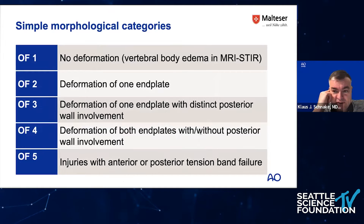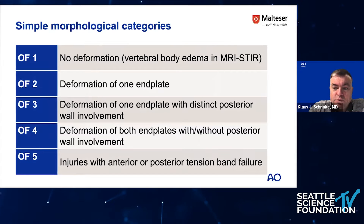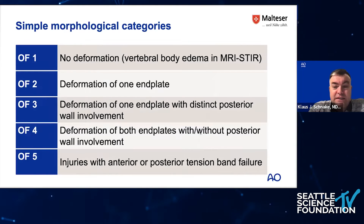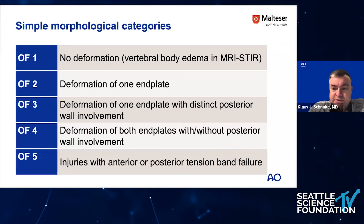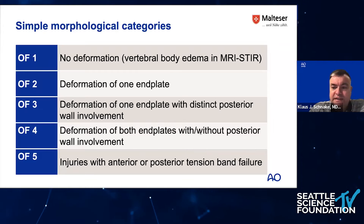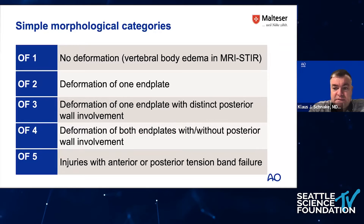The categories start with OF1, which means no deformation but a vertebral body edema in the MRI STIR sequence. Typically, it's something you accidentally find on MRI — you say, oh, there's another fracture maybe. When you go back to the CT scan with this knowledge, you may recognize it, but typically you do not see it on X-rays or CT scans. This is clear vertebral body edema in the MRI STIR sequence. We also see this in the sacrum, where we may have edema on one or both sides without a clearly visible fracture.